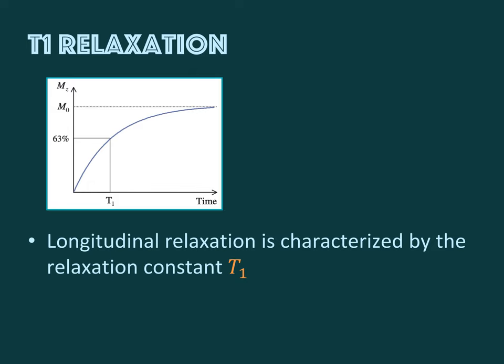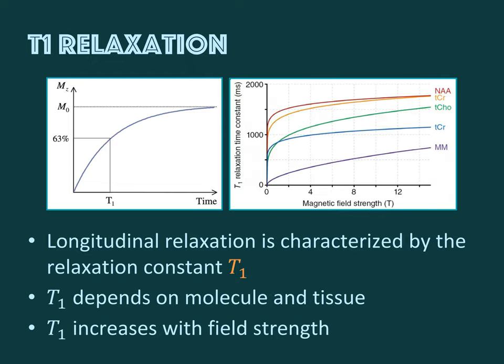The recovery of the z component of the macroscopic magnetization follows an exponential growth curve that plateaus at equilibrium magnetization M0. We can characterize this behavior with a single number — the time after which 63% of M0 has recovered — and this is called T1, the longitudinal relaxation time constant. T1 generally differs between different metabolites and varies between different types of tissue, and it generally increases with magnetic field strength, although that relationship weakens for field strengths higher than about 3 tesla.